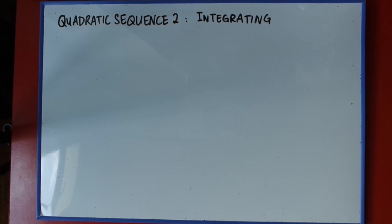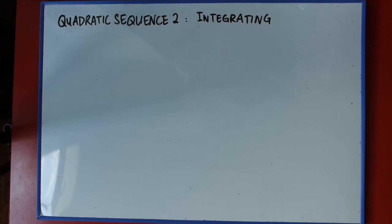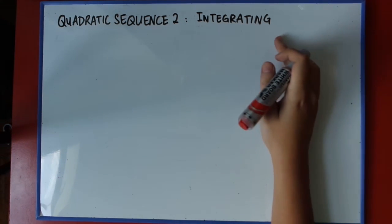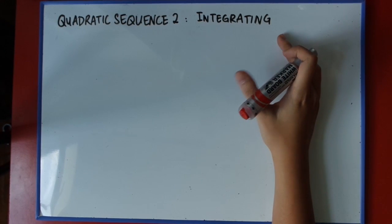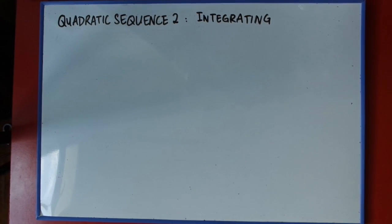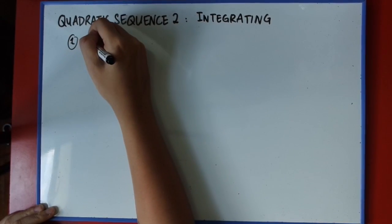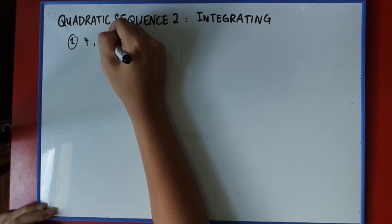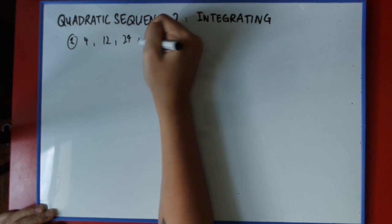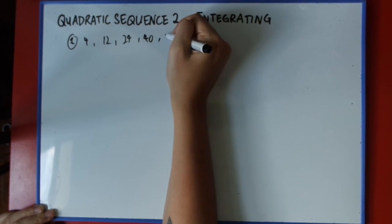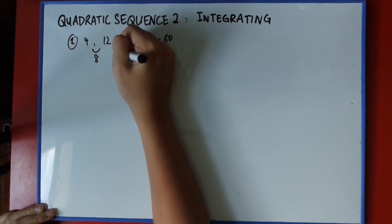Welcome back to another video on quadratic sequences. In the previous video, I've been trying to match n-squared to get the explicit formula for the quadratic sequence. But now we're trying to use another method which is called integrating. We're going to do some integration here. This method is quite straightforward, and I'm using the same sequences as we did last time.